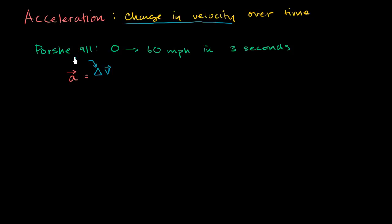So change in velocity. This delta symbol right here just means change in velocity over time. And it's really, as I've mentioned in previous videos, it's really time is really a change in time. But we could just write time here. This 3 seconds is really a change in time.